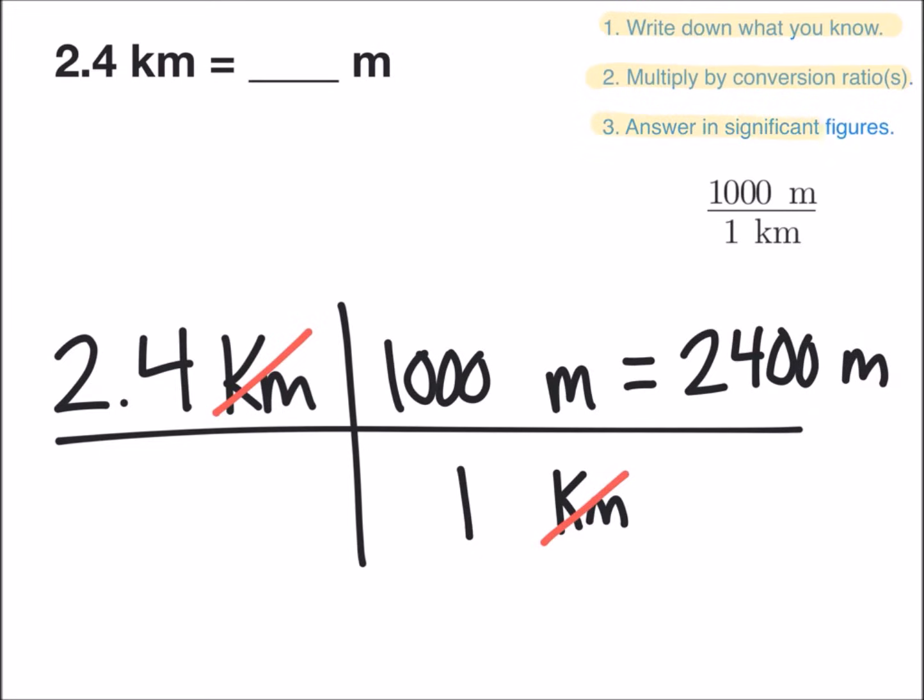The third step is to write your answer in significant figures. We're going to look at 2.4 kilometers. What we were given in our question having two significant figures. And our final answer that we just wrote, the 2 and the 4 are significant. The trailing zeros are not. So that means our answer has two significant figures and we can put a box around it.